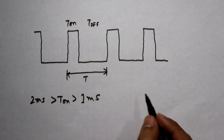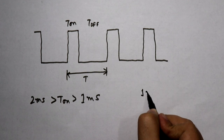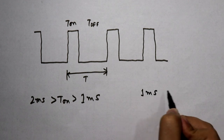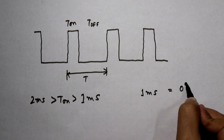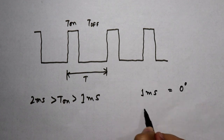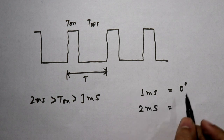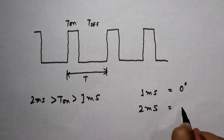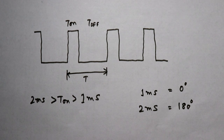In the datasheet it is given that for a T-on of 1 ms, the position of the rotor is at 0 degrees, and for a T-on time of 2 ms, the position of the rotor is at 180 degrees. We know that a servo motor can rotate from 0 degrees to 180 degrees.